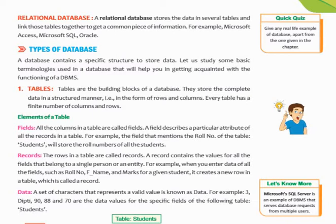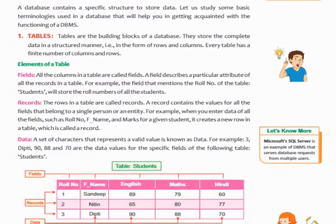A database contains a specific structure to store the data. When using databases, we must keep some important terms in mind. The first term is table. Simply, a table is a building block of a database. A table is a structure in which we store data in the form of rows and columns. Wherever a row and column cross each other, that place is called a data cell.